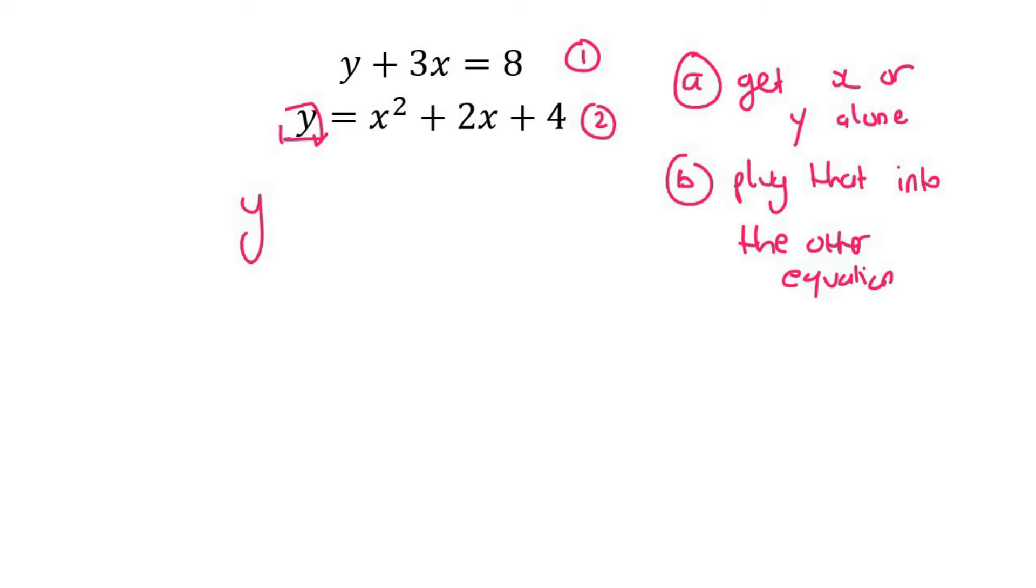So what we do is we go to the other equation. I'm just going to write it out and we're going to replace this y because it says here that y is equal to this. So we're going to put this in the place of y. So we're going to end up now with x squared plus 2x plus 4 plus 3x equals 8.